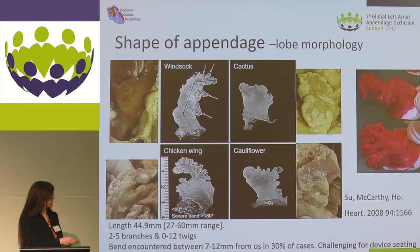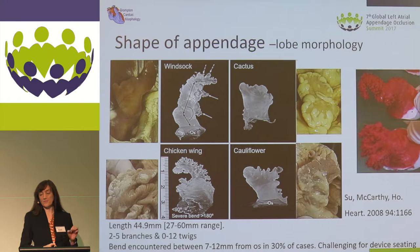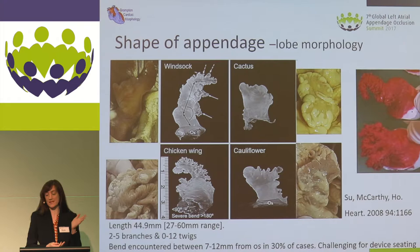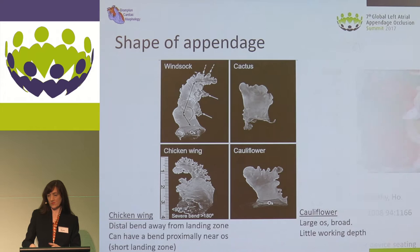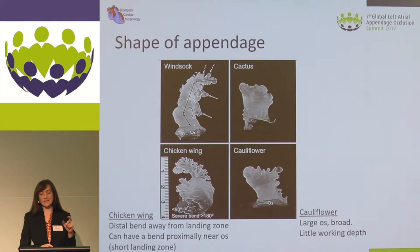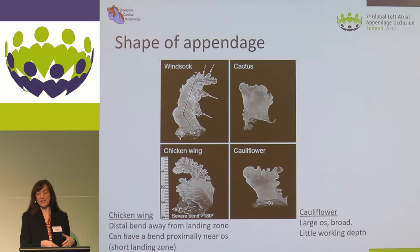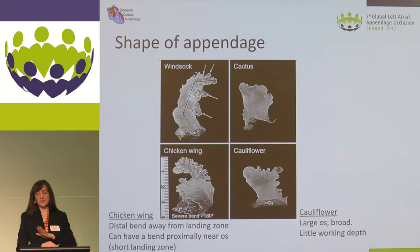With this, we can see that the bend at the os itself is the important part. We found a bend between 7 and 12 millimetres in 30% of our cases. And that's the challenge for device seating when you've got a very early bend. You want to have a good landing zone between 1 and 2 centimetres. Right at the landing zone here — a challenging case will have a short landing zone. You can have a proximal bend, which we can see here.